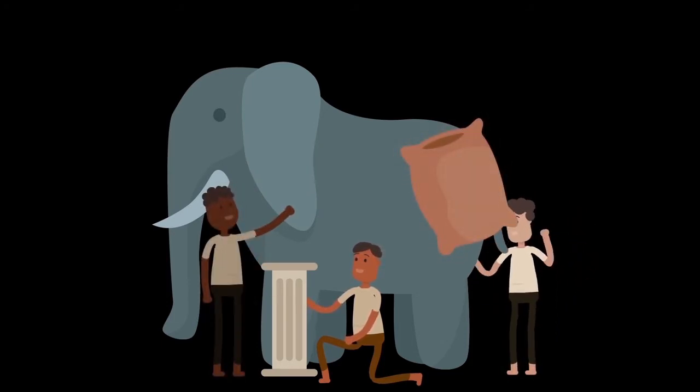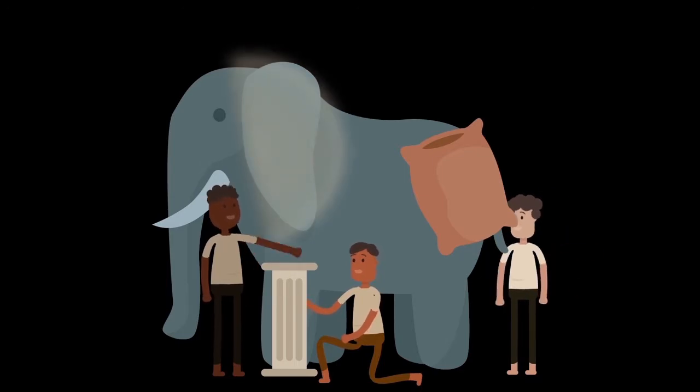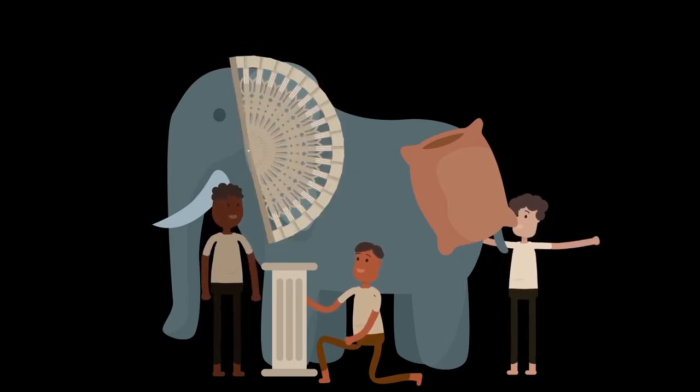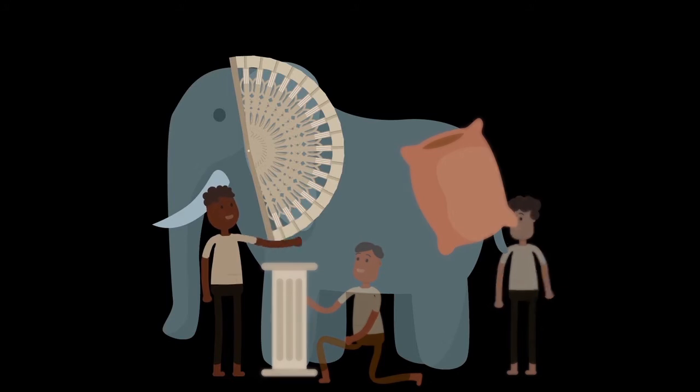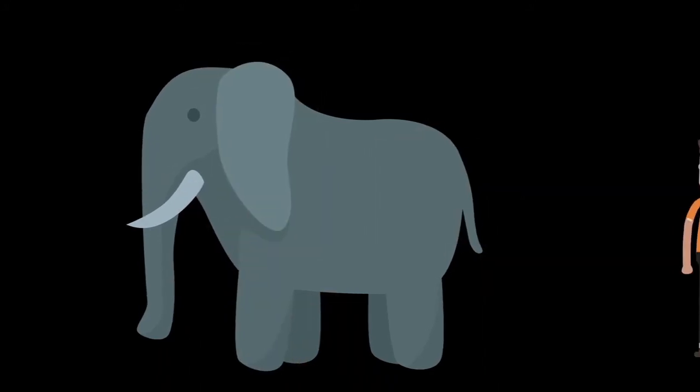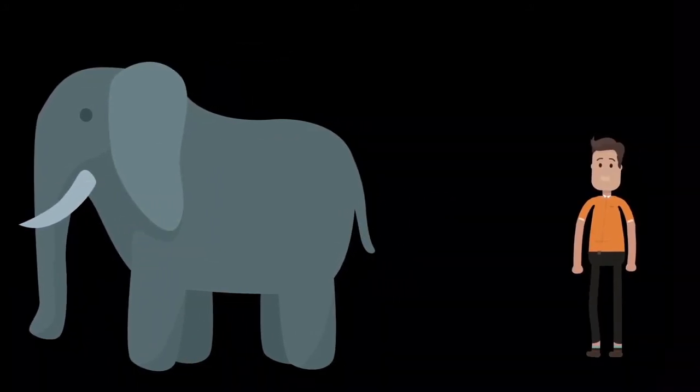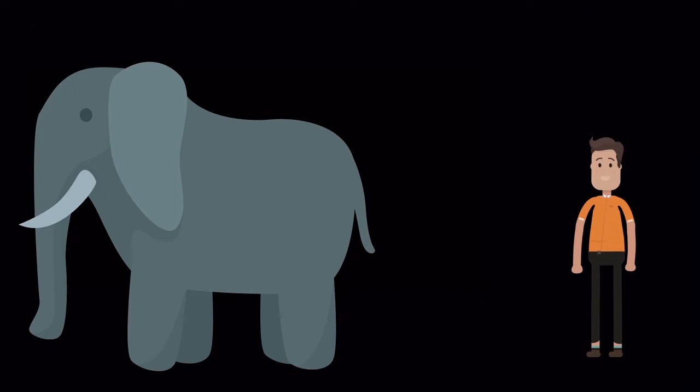And finally, the third person touches the elephant's ear, and says, an elephant is like a fan. All three of them were right in some way, but neither of them had the complete image of an elephant. The image we have from the human is also the same.